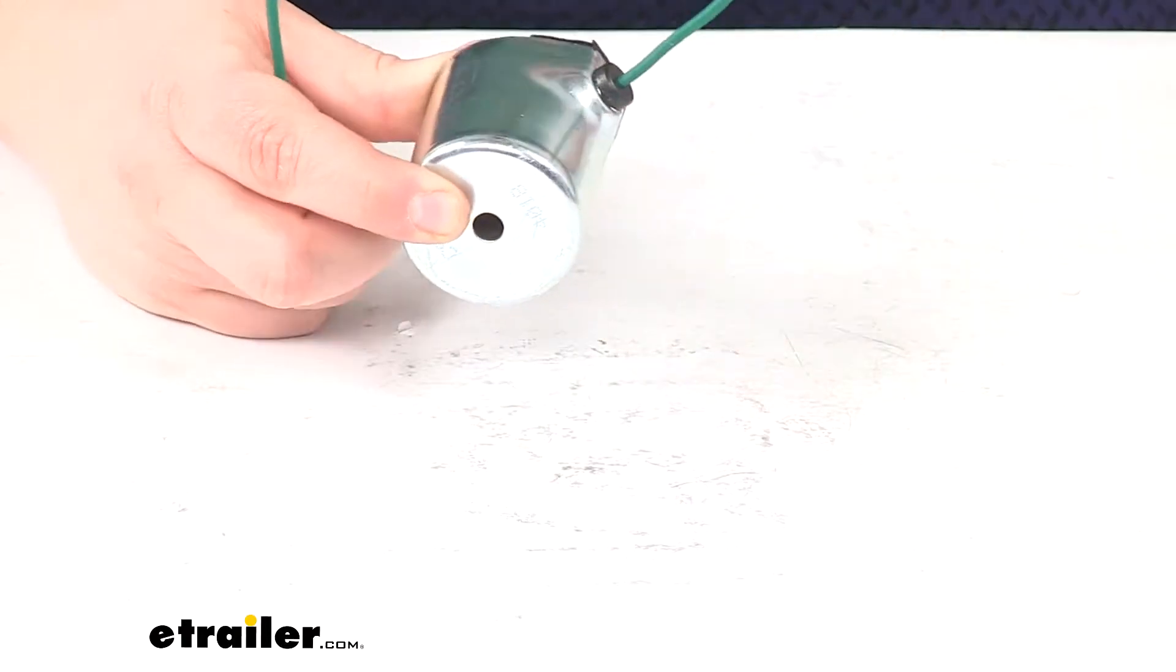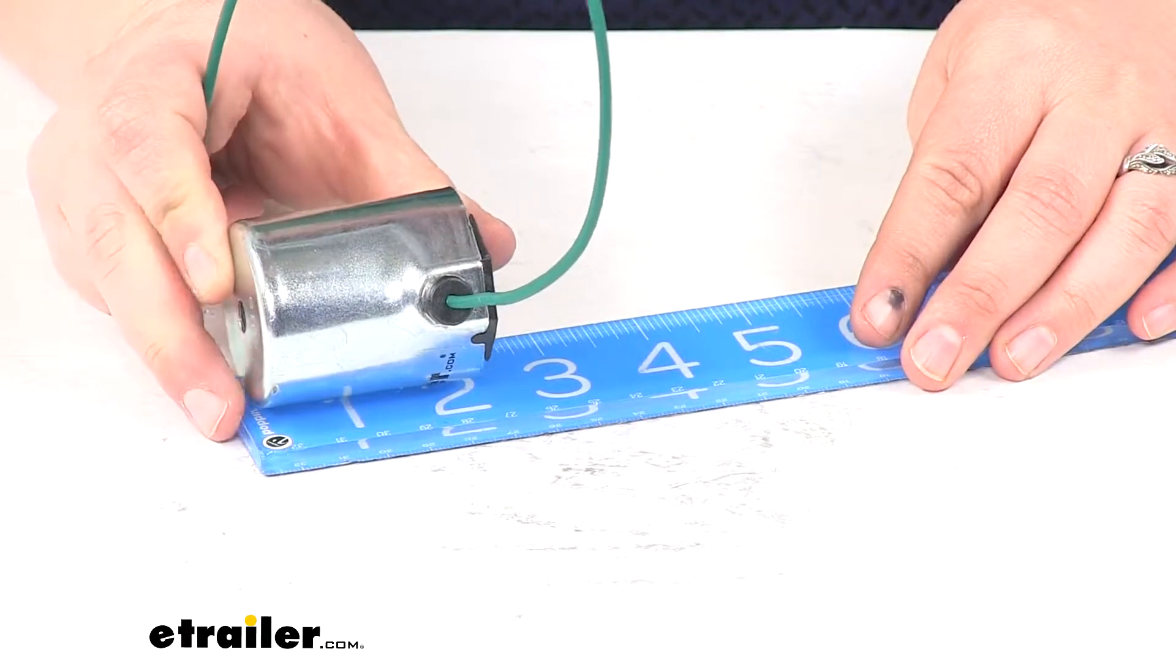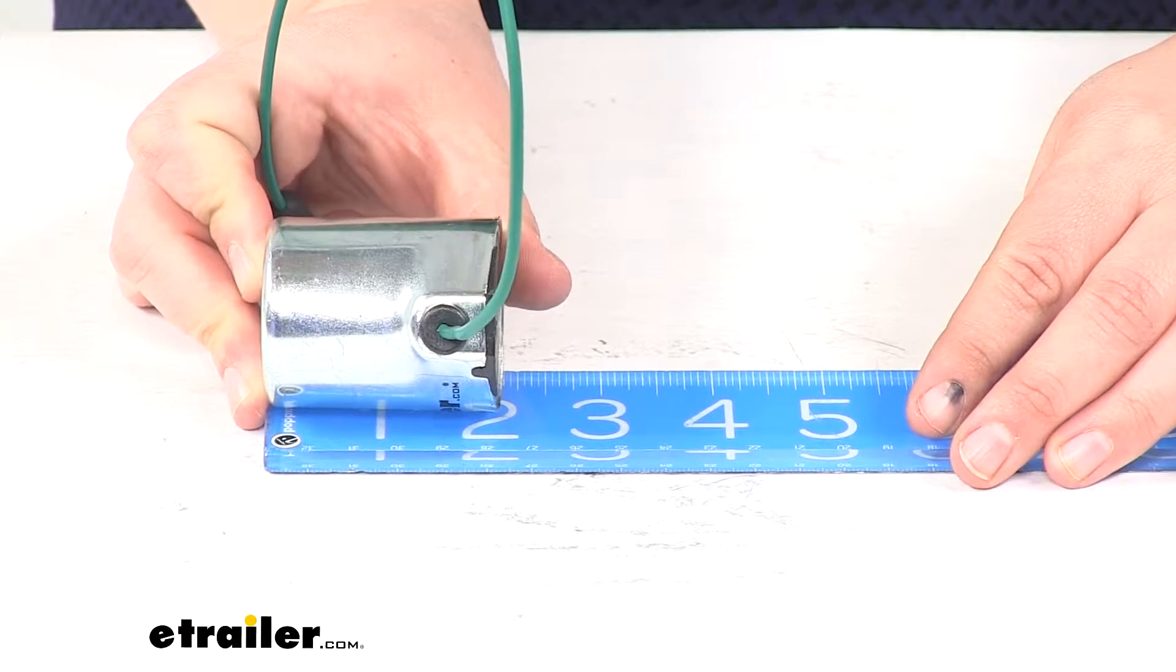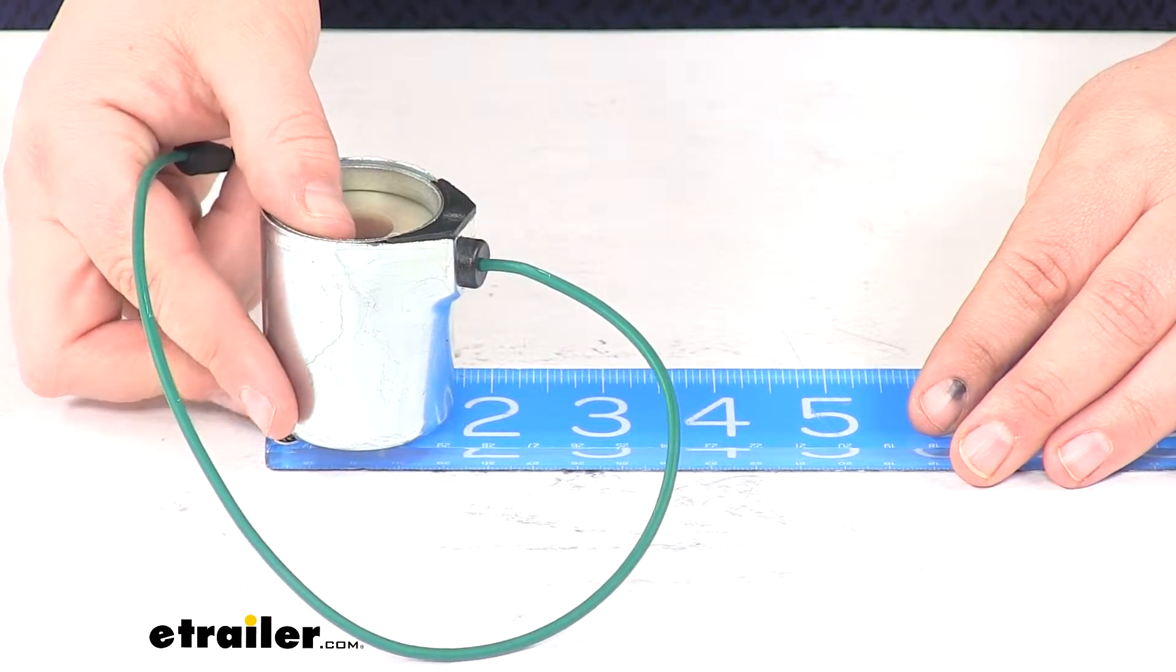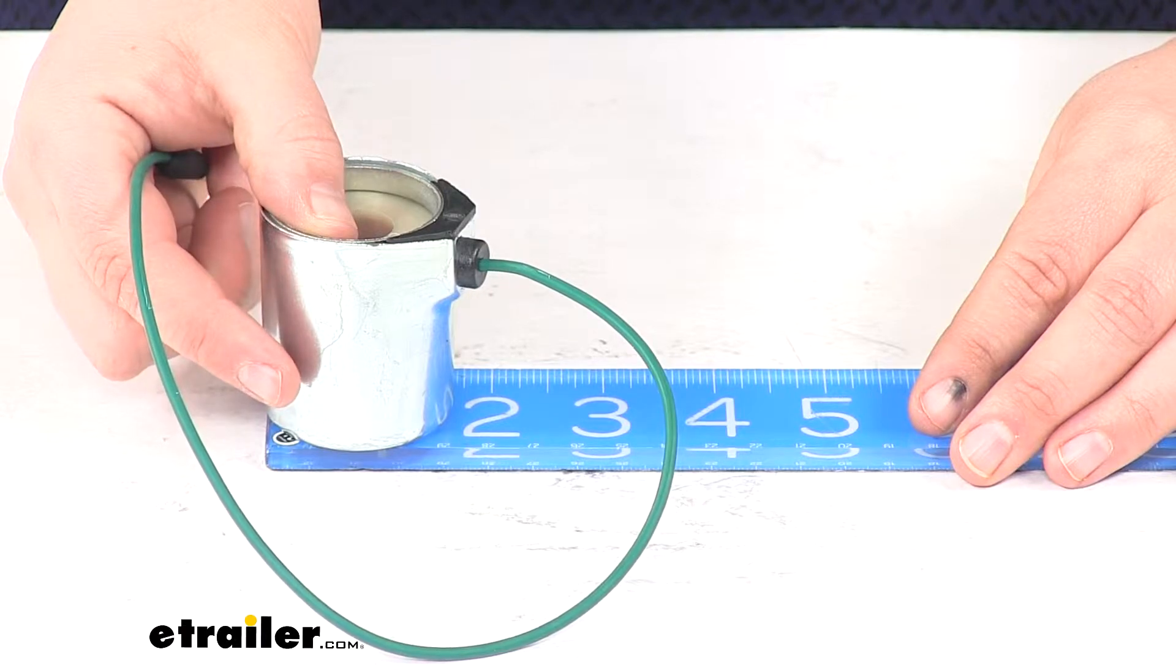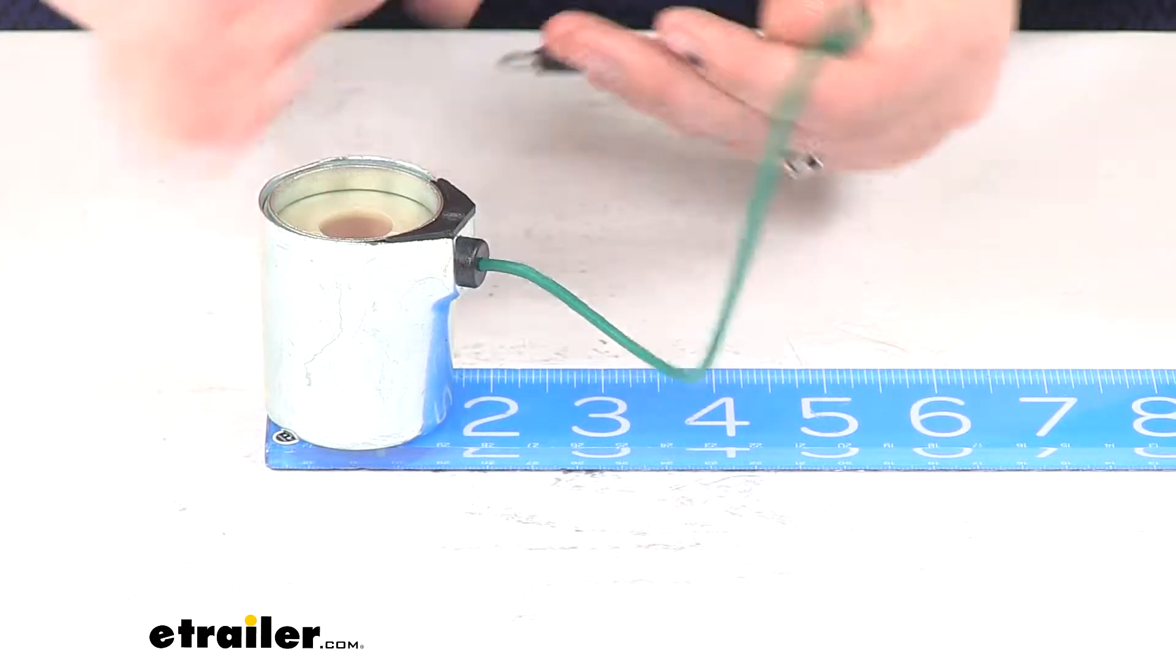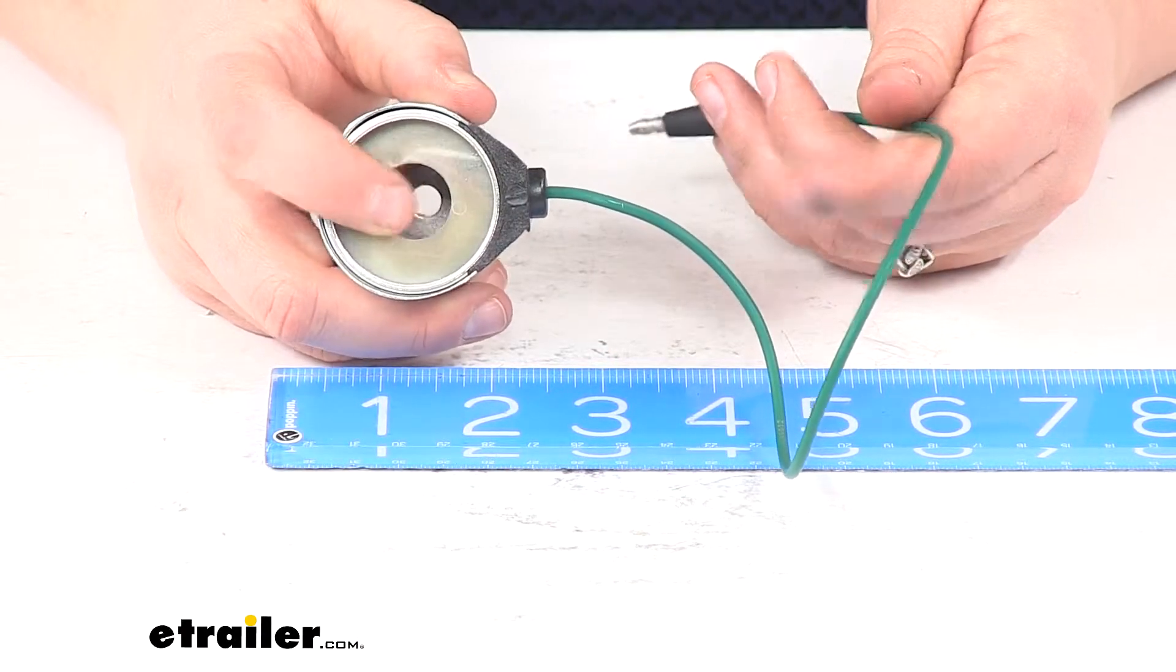Our solenoid housing itself is about two inches tall overall and about an inch and five-eighths in diameter. It has that five-eighths inch bore in the center.